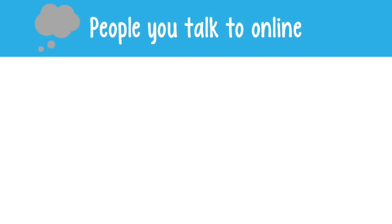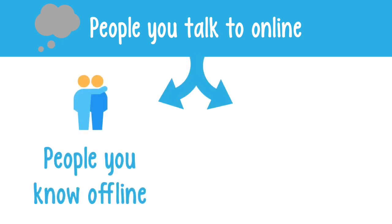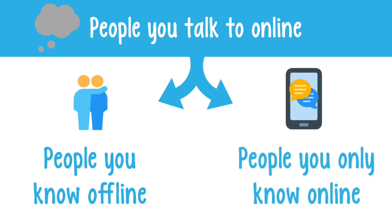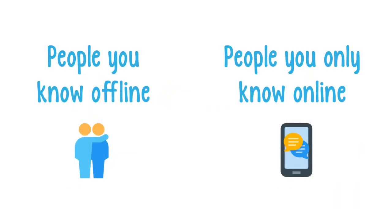I want you to think about all the people you talk to online and sort them into two groups. The first group is people you know offline as well as online — people who you know in person. The second group is people who you only know online or through the internet. You could write your groups down or just talk about it instead. Take as long as you need by pausing the video now. Hopefully you have two clear groups: people you know offline but use the internet to communicate with too, and people who you only know online.